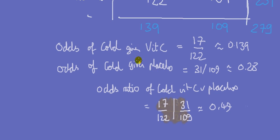What I've just described is the odds ratio. The odds ratio of a cold for vitamin C versus placebo is the odds of a cold given vitamin C divided by the odds given placebo, which comes to about 0.49 — roughly half. This tells us the odds of getting a cold in the vitamin C group is about half that of the placebo group. The log-linear model is great for associations because its coefficients give us odds ratios, providing a measure of the strength of relationships between factors.